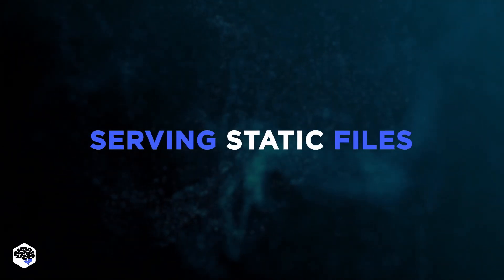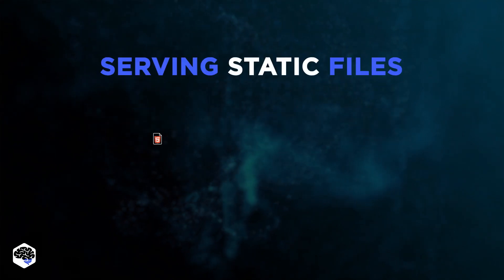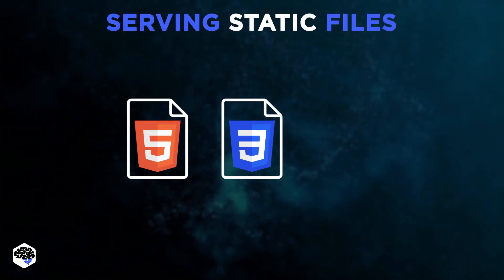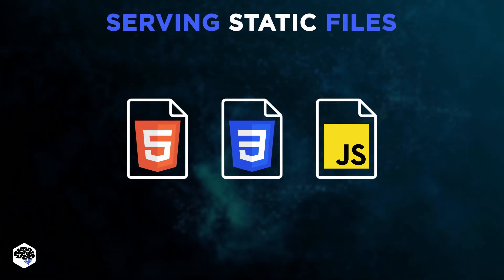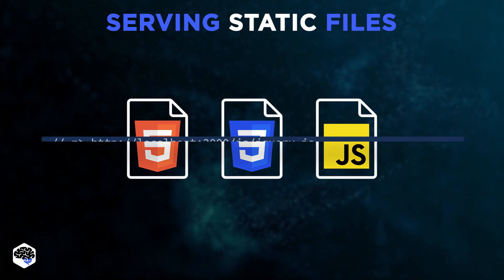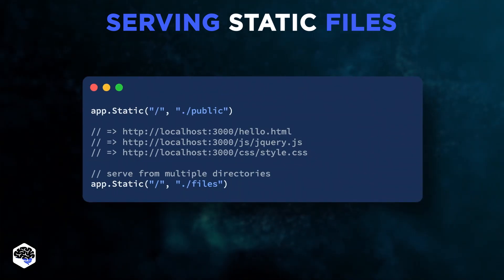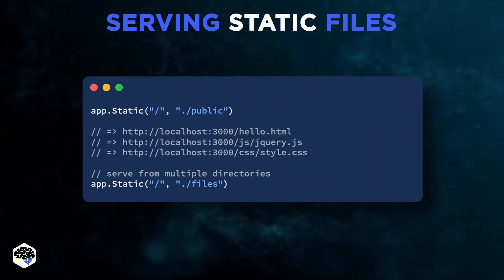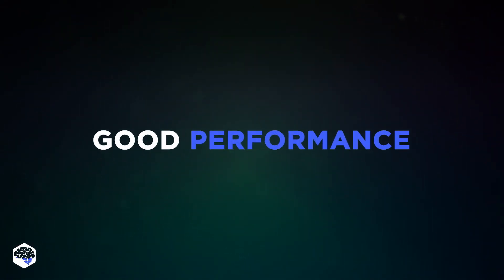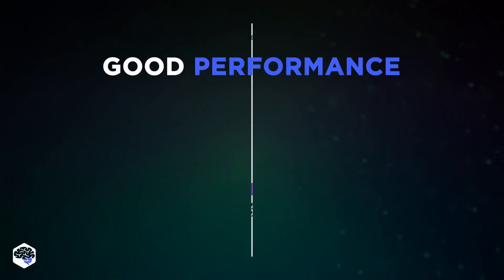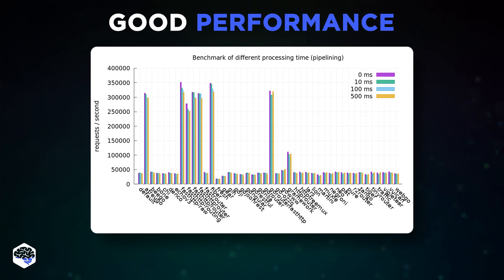The next important point is serving static files. It allows serving HTML, CSS, and JavaScript files with ease by defining static routes. You can also serve the contents of multiple directories on the same route. Since Fiber is built on top of FastHTTP, your apps will enjoy unmatched performance. Here's a benchmark that proves how Fiber shines compared to other frameworks.